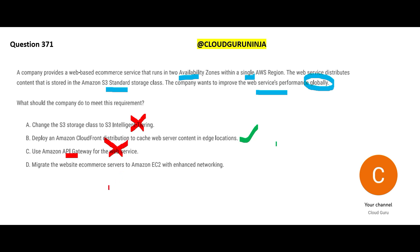Option D suggests migrating e-commerce servers to EC2 with enhanced networking. This would be relevant if the problem involved managing load spikes or auto-scaling due to high user volume. But that is not the use case here — the use case is global performance improvement. EC2 with enhanced networking won't solve that, so this option doesn't fit.